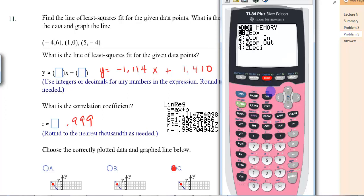Then we always do a zoom 9. It's a statistical window. So you get some dots. And it says, what's the line of least squares fit for the given data points? You will go back to stat. Over to calc. And we want to choose linear regression. And we'll hit enter. And we'll hit enter.